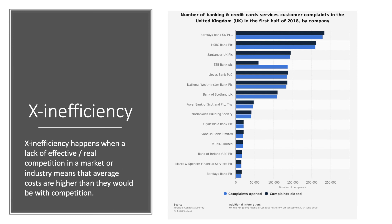X inefficiency happens when the lack of competition in a market leads to higher average costs than is necessary to supply a given level of output. The lack of real competition or contestability means that firms allow their costs to go up. Maybe they've got a monopoly, maybe they're a nationalised firm with little incentive to make a profit, or maybe the shareholders don't know what the managers are doing. Oftentimes we can see this in terms of cost, but also in terms of poor customer service — perhaps the banking sector is an example of that.